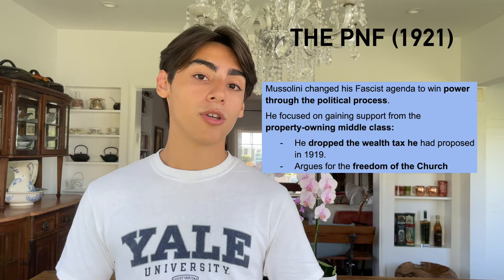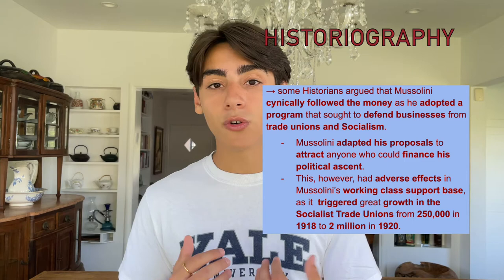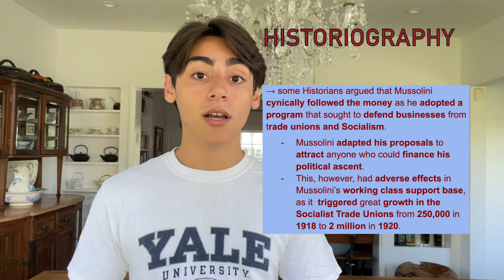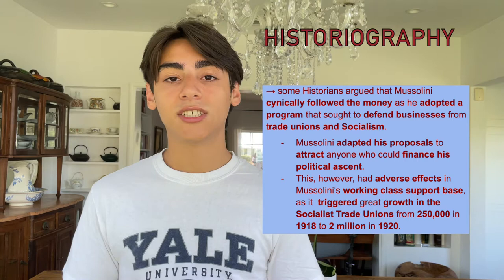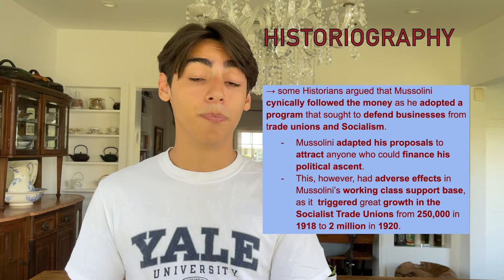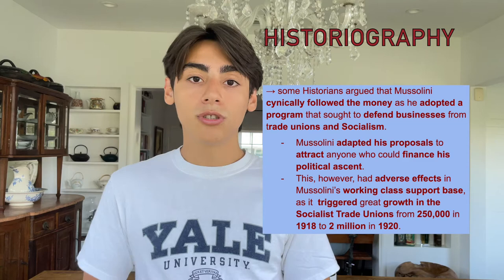For example, Mussolini now argued towards the freedom of the church and also dropped the wealth tax, which was something he had proposed back in 1919. This leads us to an interesting piece of historiography — a criticism by many historians who argued that Mussolini cynically followed the money by adopting a completely different fascist program that sought to defend businesses from syndicalism, socialism, and trade unions, which was very different from what Mussolini had previously proposed during the times of the Fascist Revolutionary Party. These historians argued that Mussolini's fascism was not a solid and concrete ideology in itself, but rather one he could adapt, remold, and reshape in order to attract those willing to finance his political ascent.